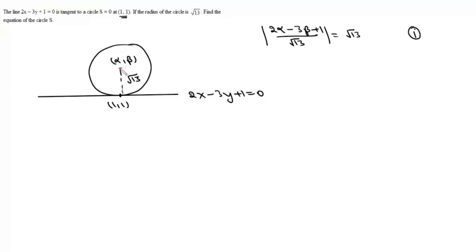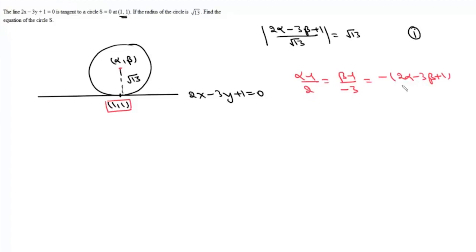We know that the foot of the perpendicular from the center on this line is the point (1,1). So we use the formula for foot of perpendicular: (α − 1)/2 = (β − 1)/(−3) = −(2α − 3β + 1)/13. Now, (2α − 3β + 1)/13 is ±1, so there will be two such points, meaning two centers.